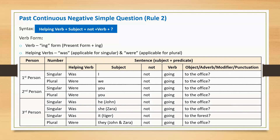Third person singular: Was he not going to the office? Instead of pronoun 'he', we can mention the name of the person — Was John not going to the office? Was she not going to the office? Using her name — Was Zara not going to the office? Was it not going to the forest? If we are referring to an animal, let's say tiger — Was tiger not going to the forest?